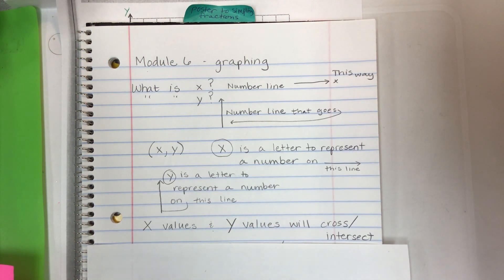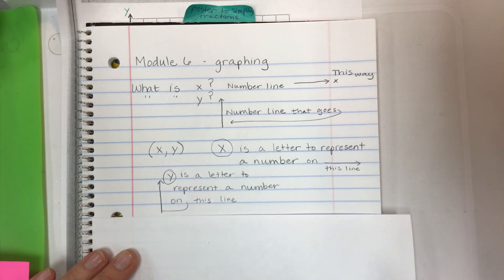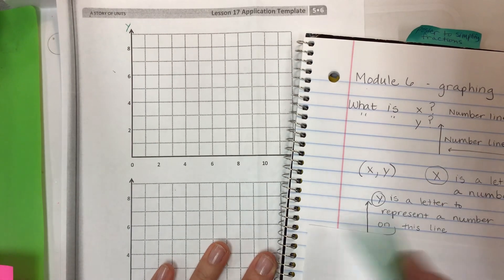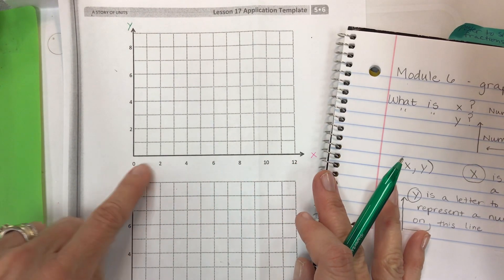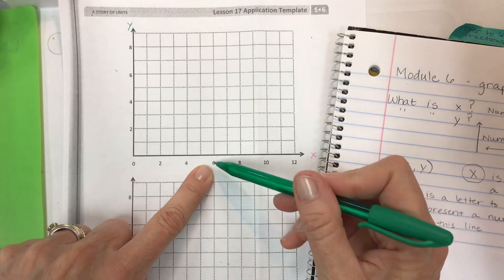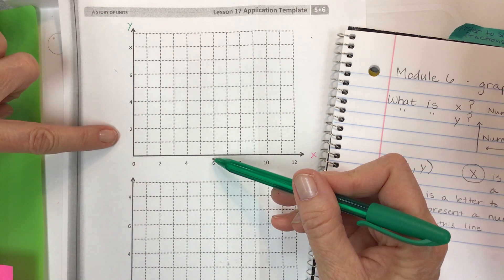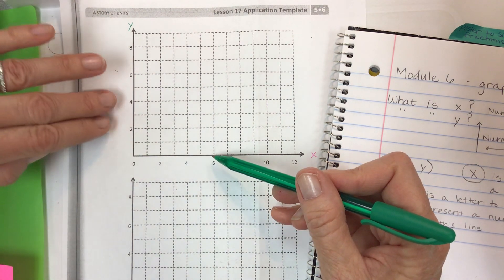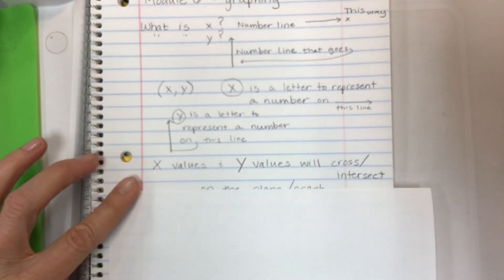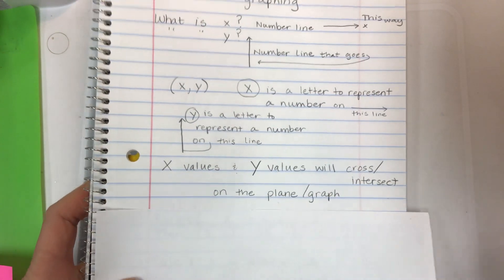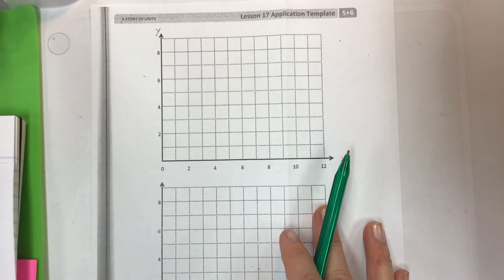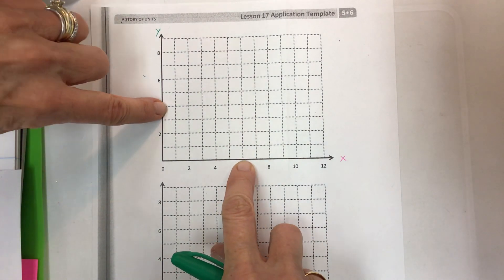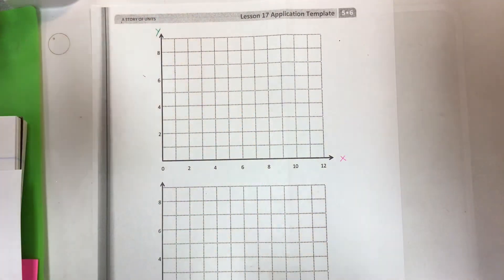The x values and y values — whatever numbers they are — will cross or intersect at some point if you follow the value up and down the graph. This is where our graph comes in handy. Let's say x is six — I use the x-axis to find the location of six and anchor myself there, then follow the y number line until I get to the value of y. So if x is six and y is four, they intersect right there.